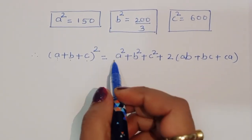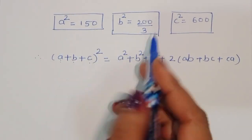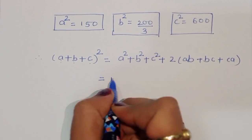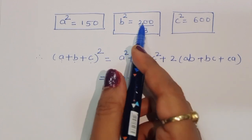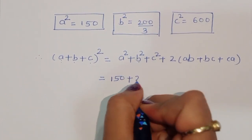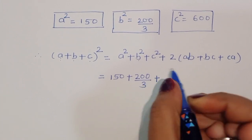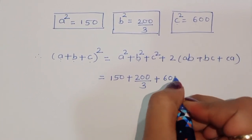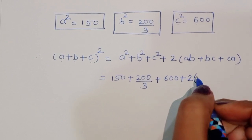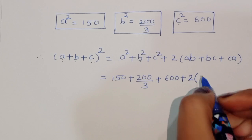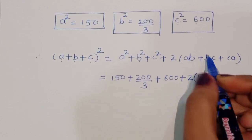Substituting the values: A squared is equal to 150, plus B squared which is 200 divided by 3, plus C squared which is 600, plus 2 times the value of AB which is 100, plus BC which is 200, plus CA which is 300.